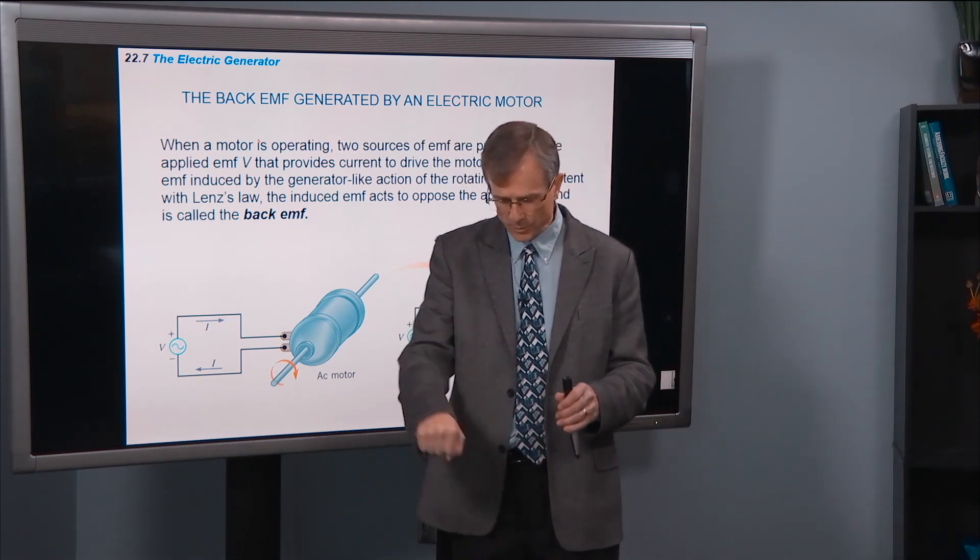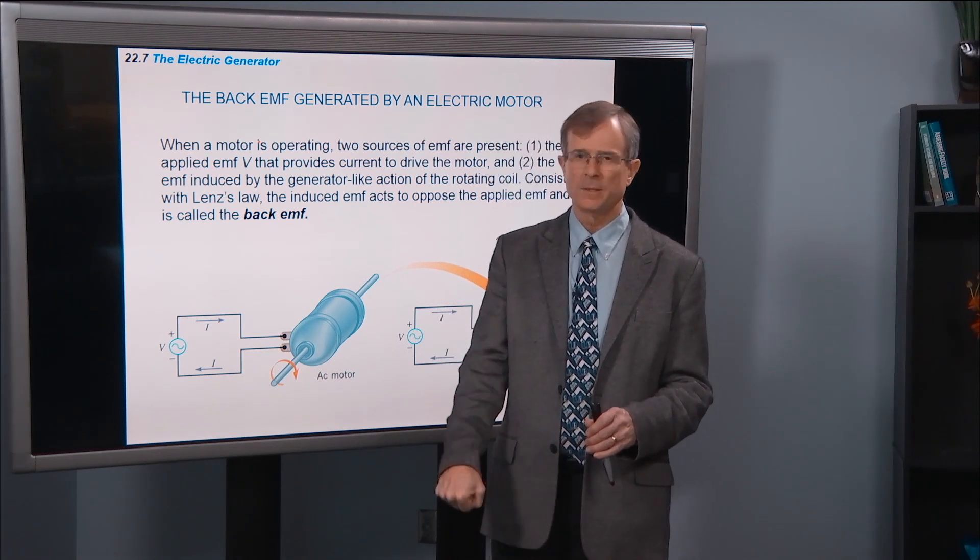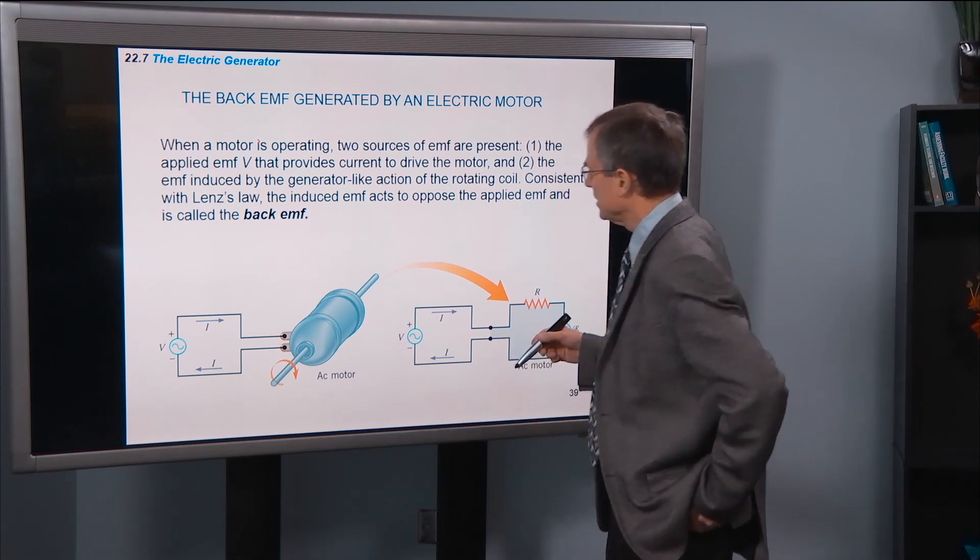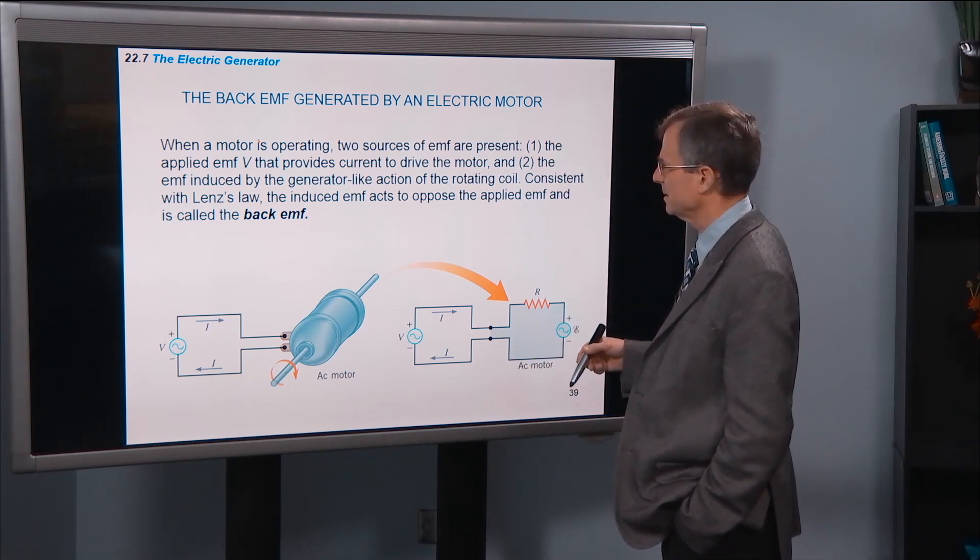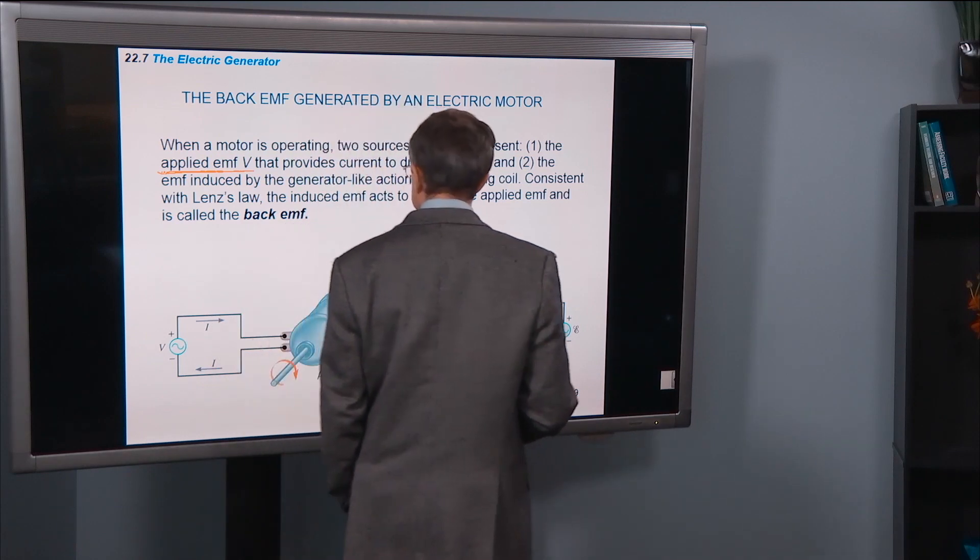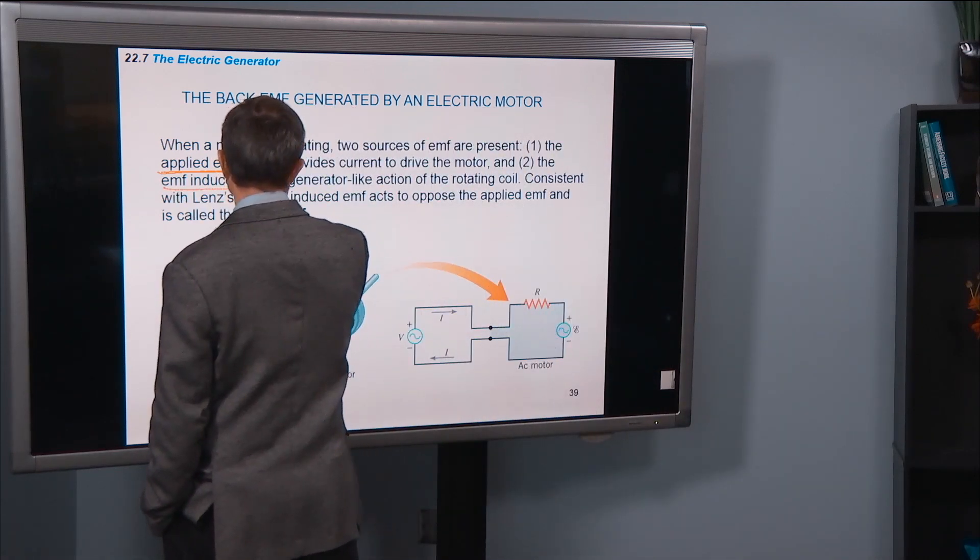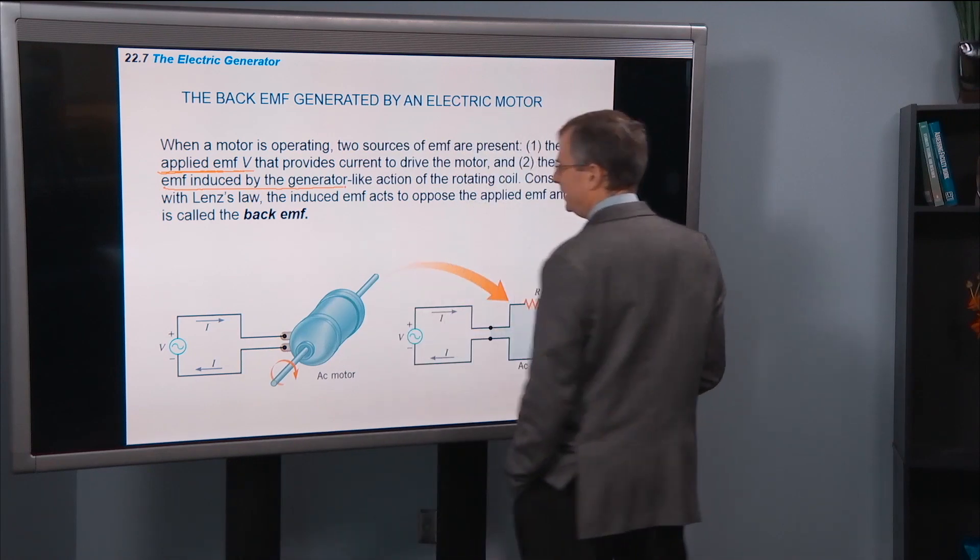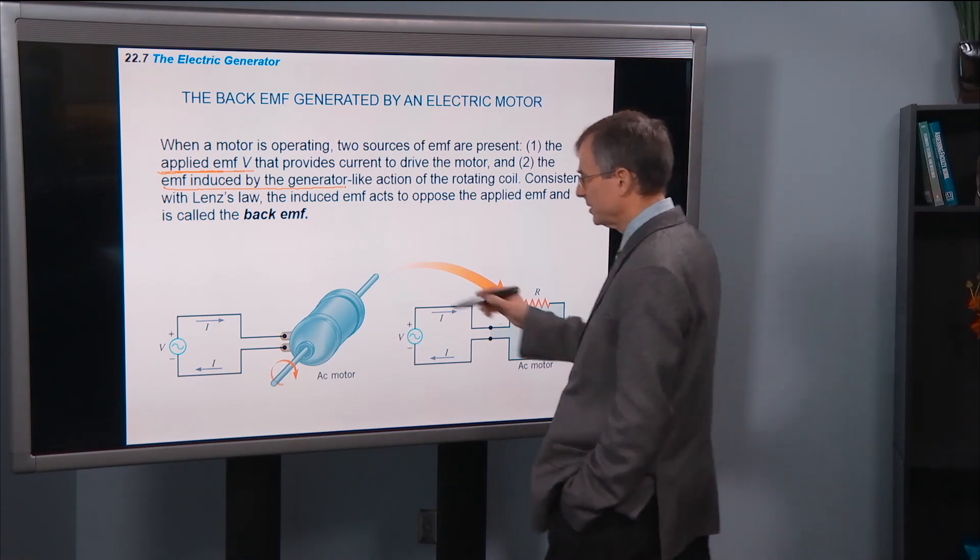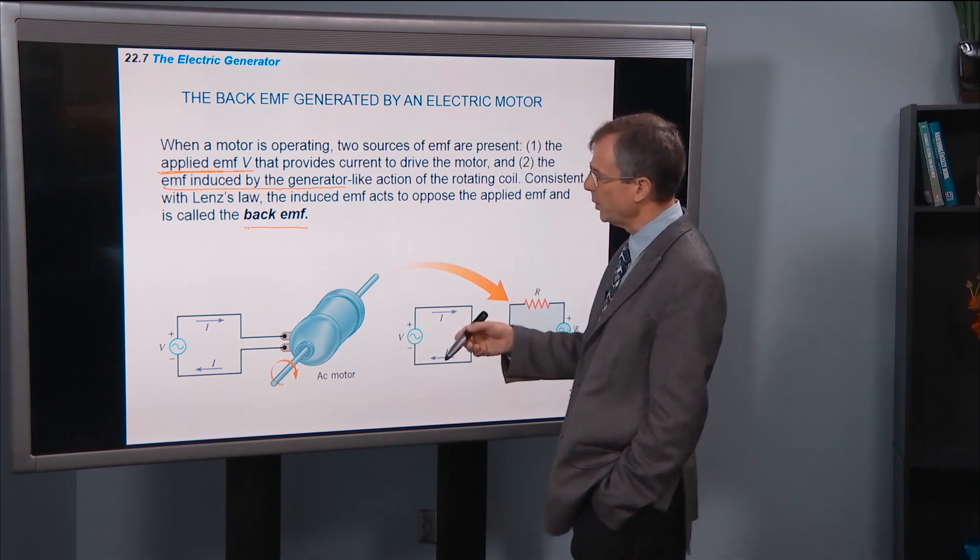As I indicated in the demonstration with the hand-cranked generator, you don't get something for nothing. You have to put some effort into that generator to get some energy out of it. And this is the idea. When a motor is operating, there are two sources of EMF that are present. First of all, the applied EMF that provides the current to drive the motor. And secondly, the EMF induced by the generator action of the rotating coil. This is a back EMF trying to oppose the motion. And so the current is subject to both of those EMFs that are present.